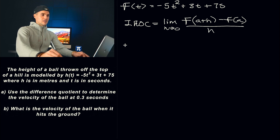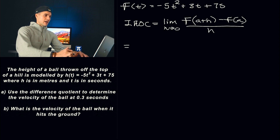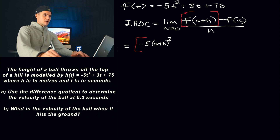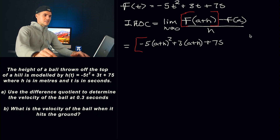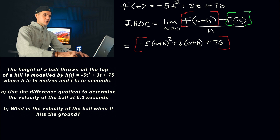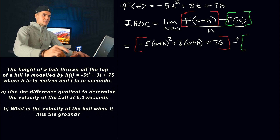So all we have to do is plug in everything. F of A plus H means we plug in A plus H for all the T values. I'll show this in different colors. The red bracket represents F of A plus H: negative 5 times (A plus H) squared, plus 3 times (A plus H), plus 75. Then minus F of A in a green bracket.